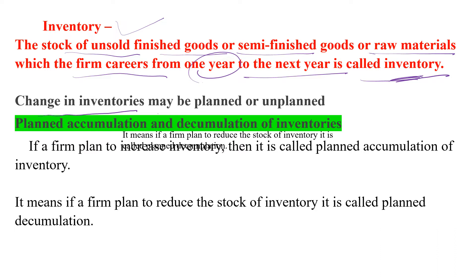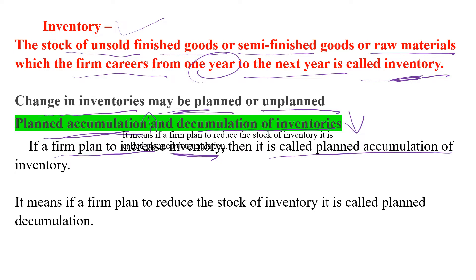Change in inventory may be planned or unplanned. Let us discuss planned accumulation and decumulation of inventory. Accumulation is nothing but an increase in the stock of inventory. Decumulation, as we discussed, means a decrease in inventory. If a firm plans to increase inventory, then it is called planned accumulation of inventory.